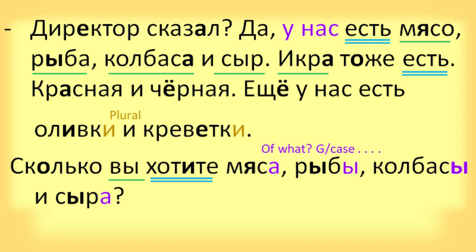Yes, we have meat, fish, sausage and cheese. Икра тоже есть — There is also caviar, красное и черное — red and black. Еще у нас есть оливки и креветки. We also have olives and shrimp. Сколько вы хотите мяса, рыбы, колбасы и сыра? How much meat, fish, sausage and cheese do you want?